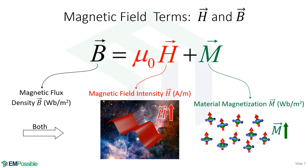The magnetic field term B is the all-inclusive term that includes both forms of magnetic energy — the energy in the field itself and the energy stored in matter as displaced magnetic dipoles. It's called the magnetic flux density, with units of webers per meter squared. We multiply the magnetic field intensity H by the free space permeability to give the field energy the same units as the tilted dipoles.